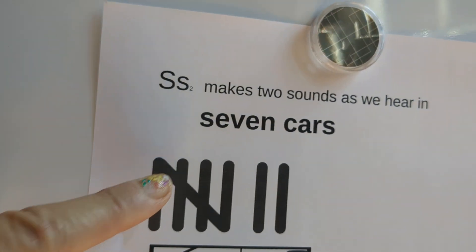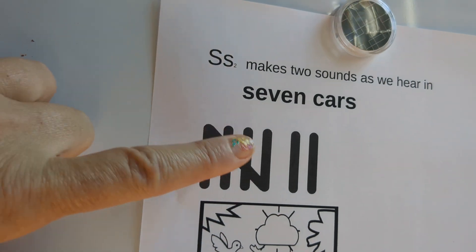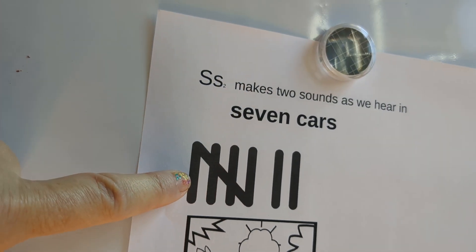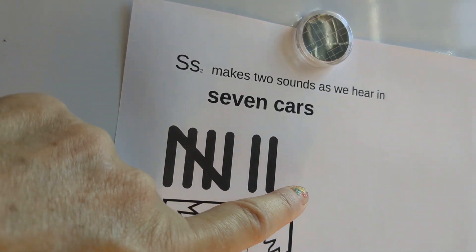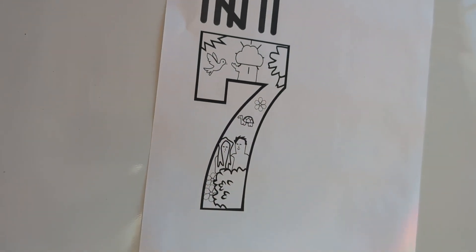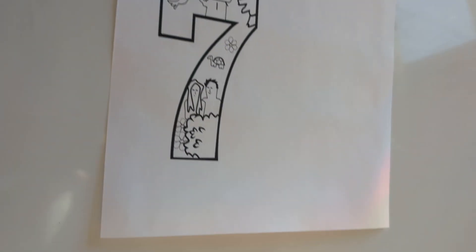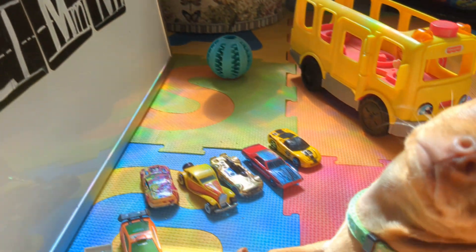These are tally marks. When you see a group like this, it means five plus two more is seven, and this is also the number seven, and seven starts with the letter S.